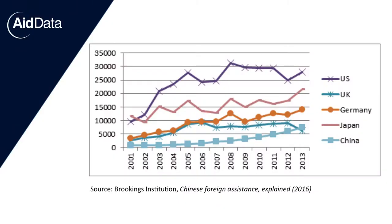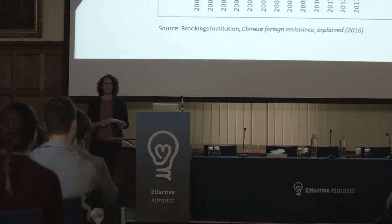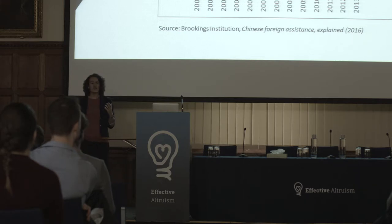The global development landscape is changing rapidly, and emerging donors like China and the Gulf Cooperation states represent an increasing share of development assistance worldwide. However, these emerging donors do not report their data publicly on what aid projects they are funding around the world, creating a critical blind spot in the picture of development investment globally.